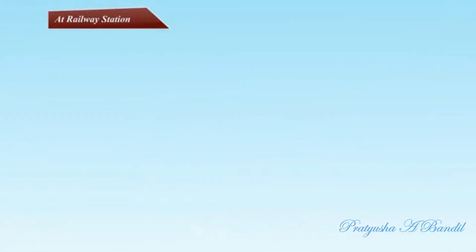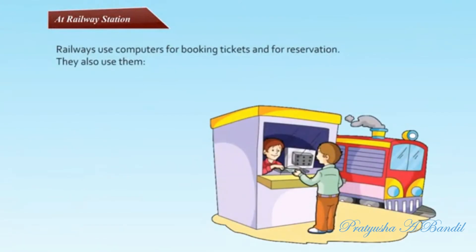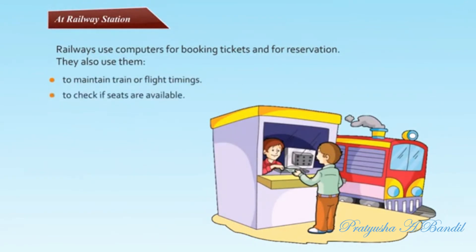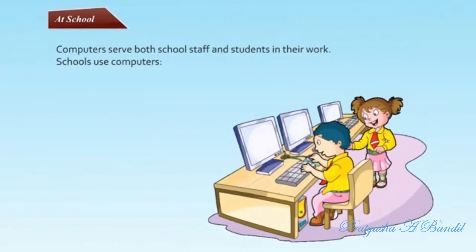At Railway Station: Railways use computers for booking tickets and for reservation. They also use them to maintain train or flight timings, to check if seats are available, and to issue tickets or book seats.